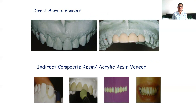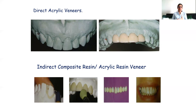The fourth technique is the indirect composite resin or acrylic resin veneer: temporaries are fabricated in the laboratory directly on the cast of the prepared teeth, then placed on the prepared teeth, cured, and after finishing and polishing, luted with temporary cement.